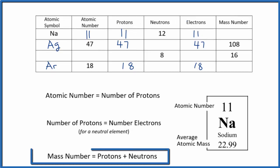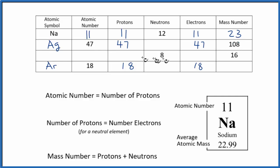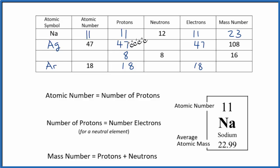Rule 3: the mass number equals the protons plus neutrons. For sodium, if we have 11 protons and 12 neutrons, 11 plus 12 is 23 — that's the mass number. For another row, we have 8 neutrons and a mass number of 16, so something plus 8 gives us 16 — that's 8 plus 8. For silver, 47 plus something gives us 108 — that turns out to be 47 plus 61 equals 108.